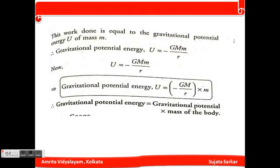Next, the work done is equal to the gravitational potential energy which is U of mass m. So we can write that U equals minus GMm divided by r, or the gravitational potential energy is U equals minus GM by r times m, which is gravitational potential times mass of the body.